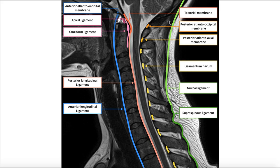Back here we have the posterior atlanto-occipital membrane and the posterior atlanto-axial membrane, and those become continuous with the ligamentum flavum, which continues all the way down the spine. In light green back here is our nuchal ligament — remember it extends from the external occipital protuberance down to the vertebral prominence at C7. Beneath that we have supraspinous ligaments. The nuchal ligament, once it gets to C7, becomes continuous with those supraspinous ligaments as they run all the way down the spine.